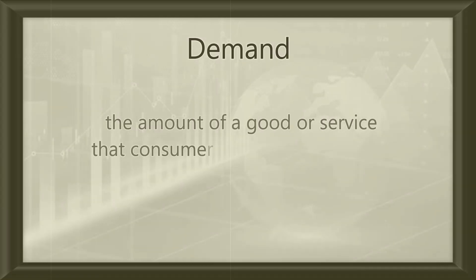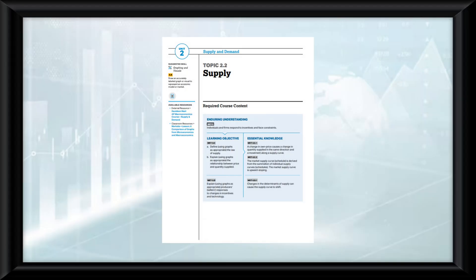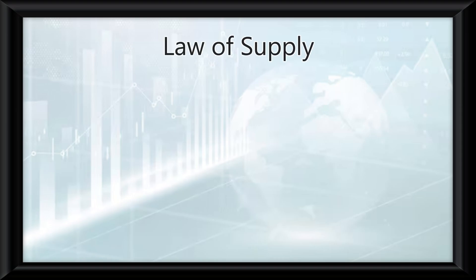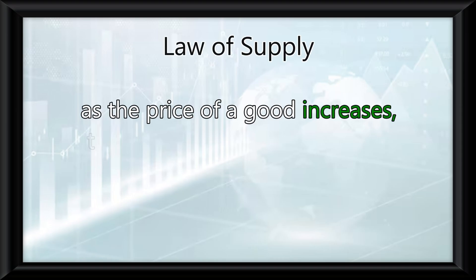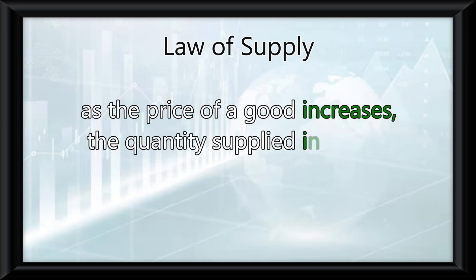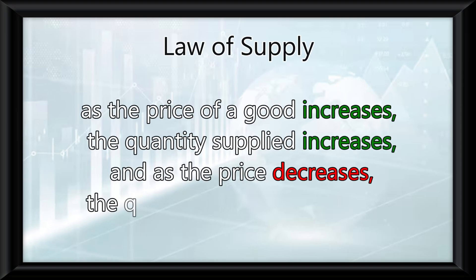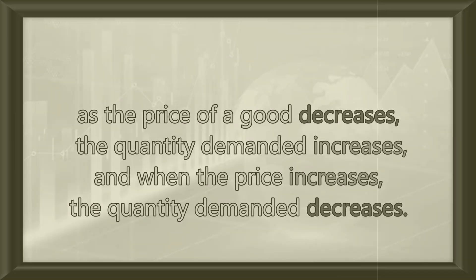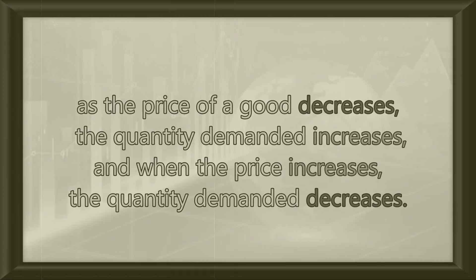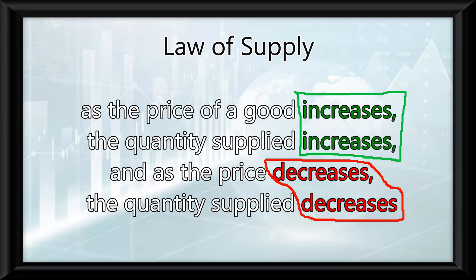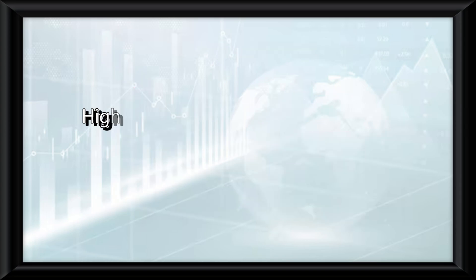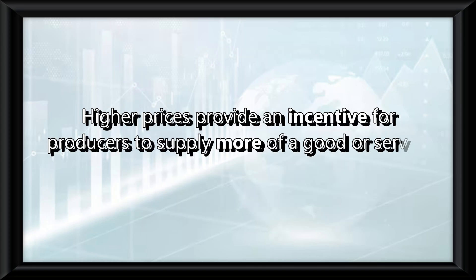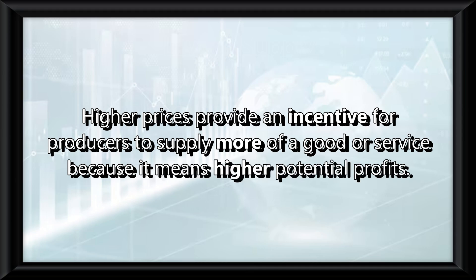Now we shift to Topic 2.2 to talk about supply. The law of supply states that as the price of a good increases, the quantity supplied increases, and as the price decreases, the quantity supplied also decreases. So unlike demand, where there's an inverse relationship, supply has a direct relationship between price and quantity. Higher prices provide an incentive for producers to supply more of a good or service because it means higher potential profits.